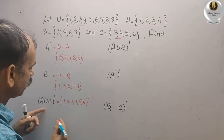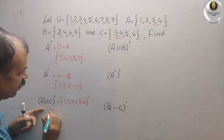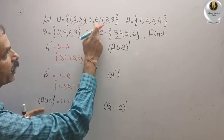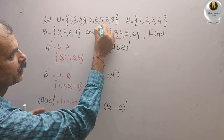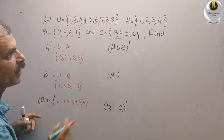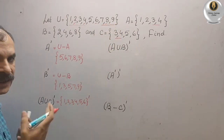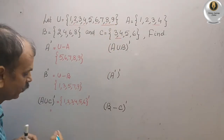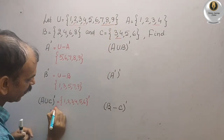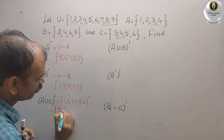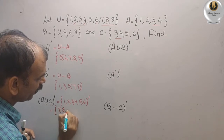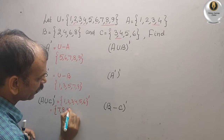Since A union C = {1, 2, 3, 4, 5, 6}, the extra elements remaining in U are 7, 8, and 9. So (A union C)' = {7, 8, 9}.